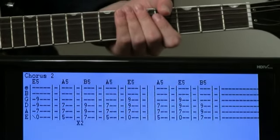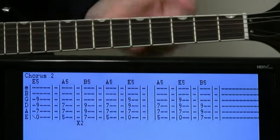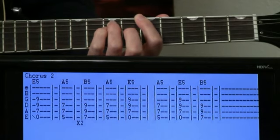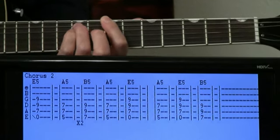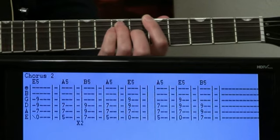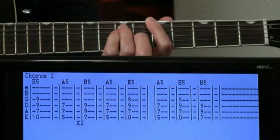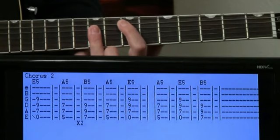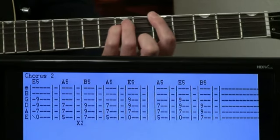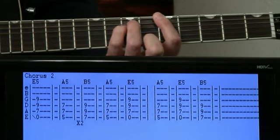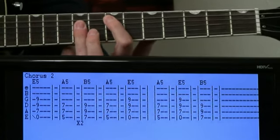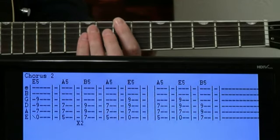And by the time we get to the second chorus, we go through the whole progression once. And at this point we go to the E, the A, but then back to the E, and now the B.